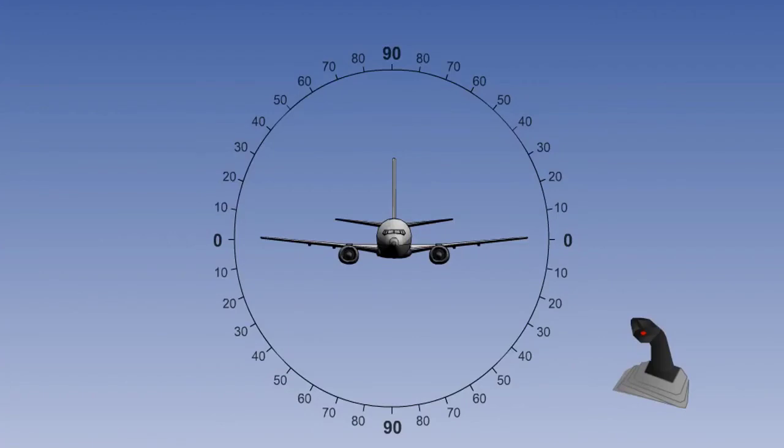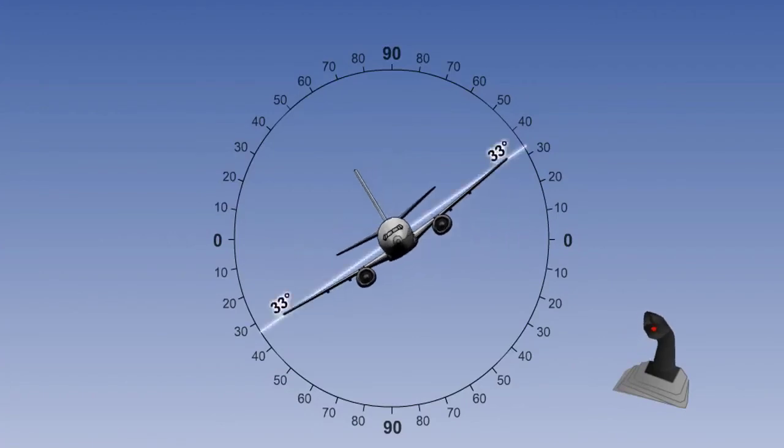On commercial airplanes, the bank angle does not normally exceed 30 degrees. For an Airbus airplane, if the bank angle remains within 33 degrees, the flight control computers will automatically apply pitch compensation and maintain the selected bank angle when the controls are released.